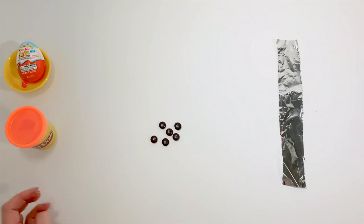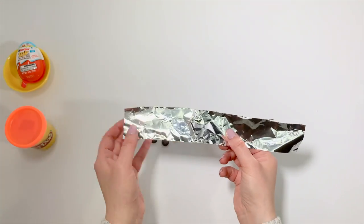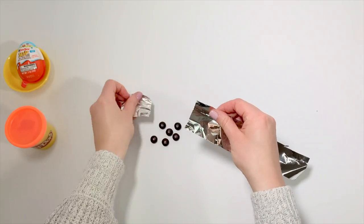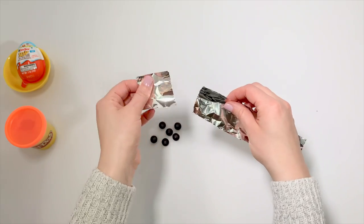Set your play-doh box aside and let's rip the foil into six squares. Use only your fingers when you're trying to break it.